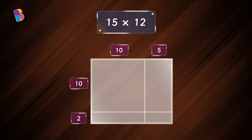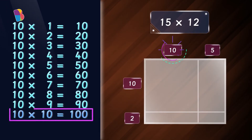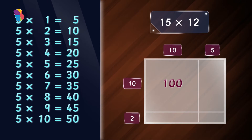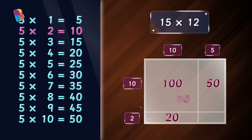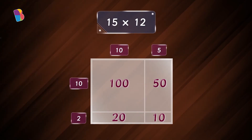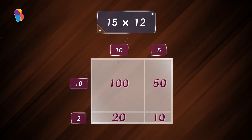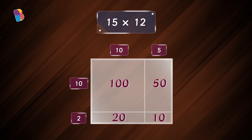Okay, time to solve this. I have to multiply the length and the width of each rectangle to find its area. That means I need to find ten times ten, five times ten, ten times two, and five times two. The area of the first rectangle is ten times ten, which is one hundred.